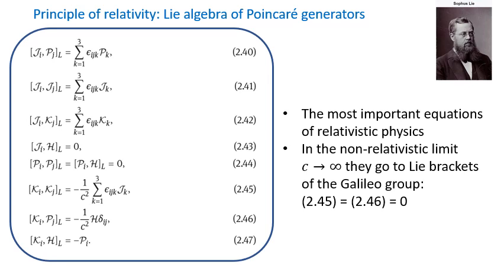To recap: today we learned that transformations between different observers form the Poincaré group. We also know that each quantum system is described in its Hilbert space. The next step is to find out how descriptions by different observers are related to each other — this brings us to Wigner's idea about unitary representations of the Poincaré group, which will be the topic of my next lecture.